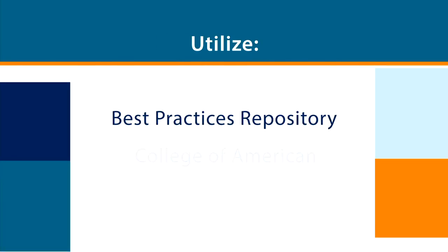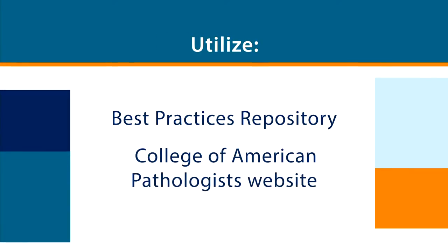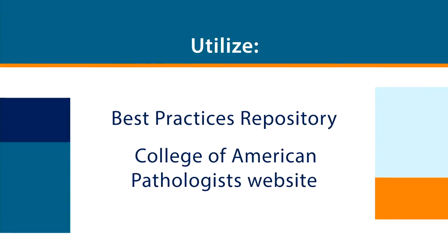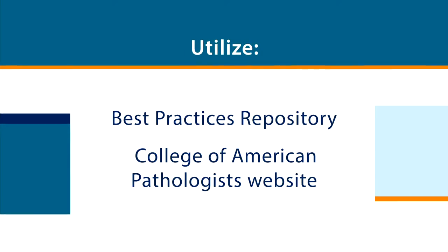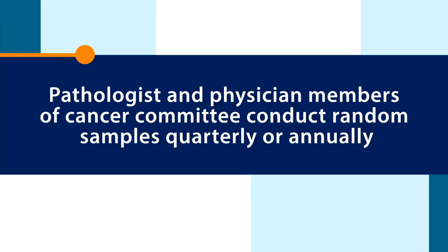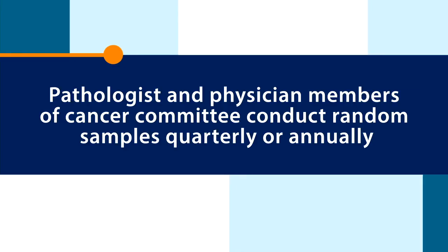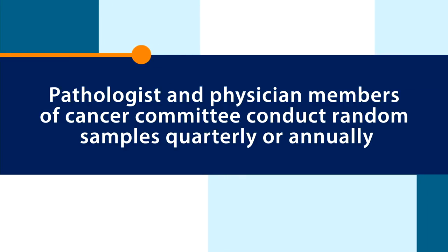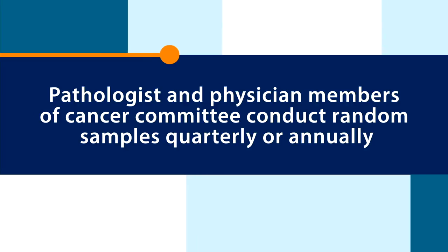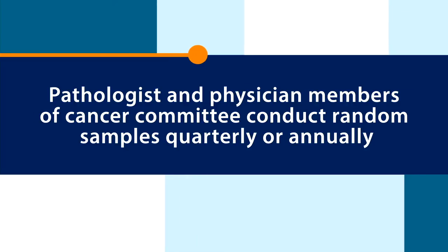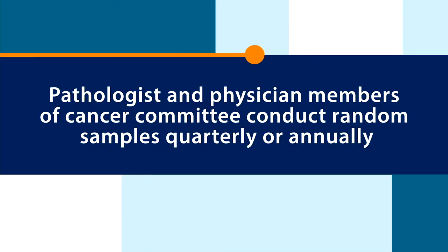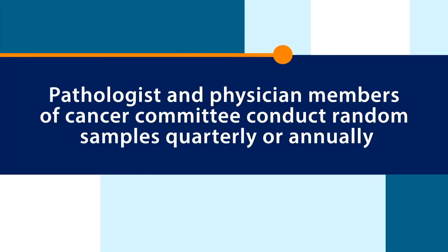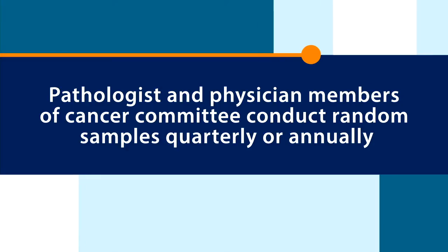Programs and pathologists can look to the best practices repository as well as the College of American Pathologists website for samples, templates, and clarification of the requirements. One of the best ways to ensure compliance with this standard is for the pathologist and other physician members of the Cancer Committee to conduct random samplings of cancer pathology reports, quarterly or annually, for compliance. Reporting the findings to the Cancer Committee will ensure oversight.